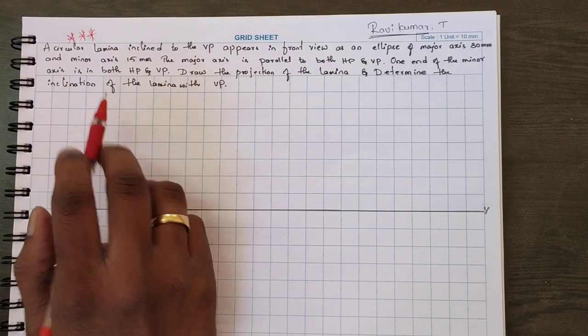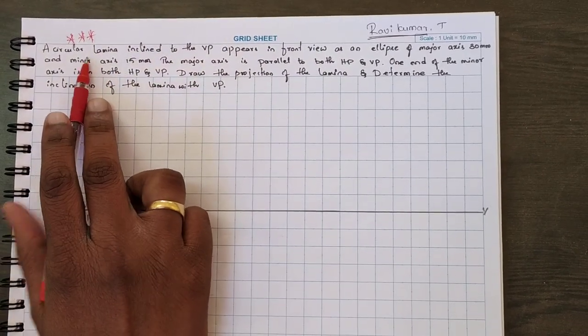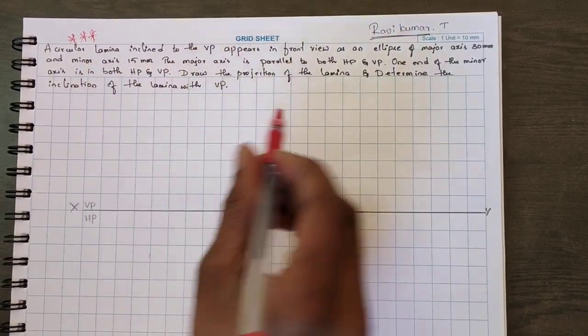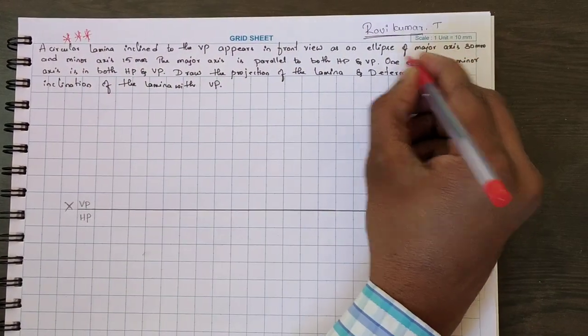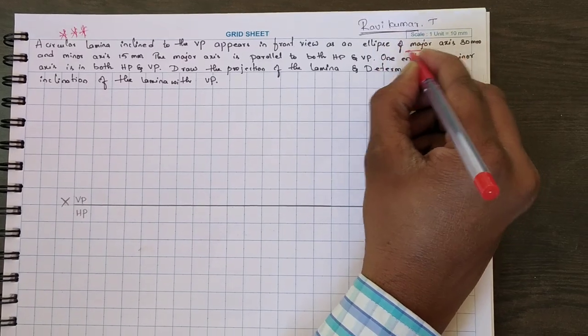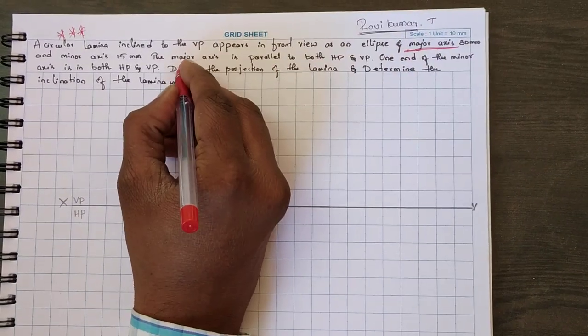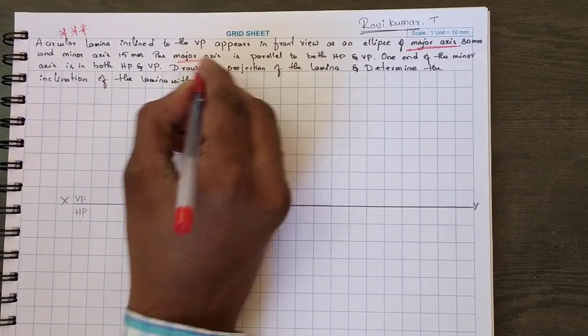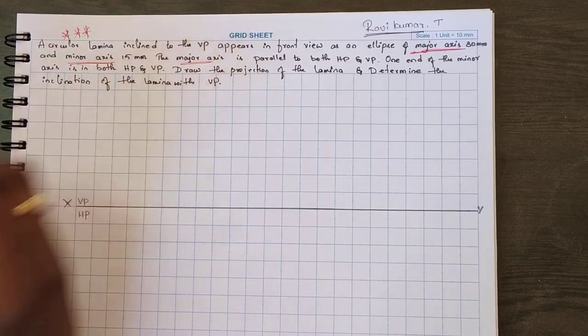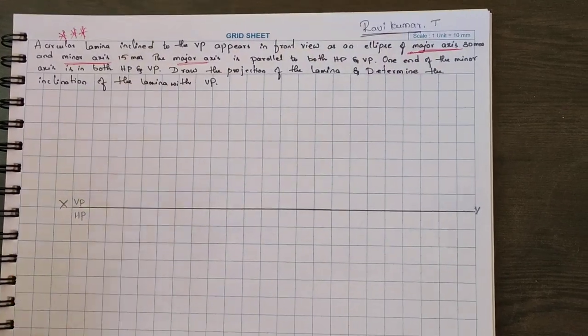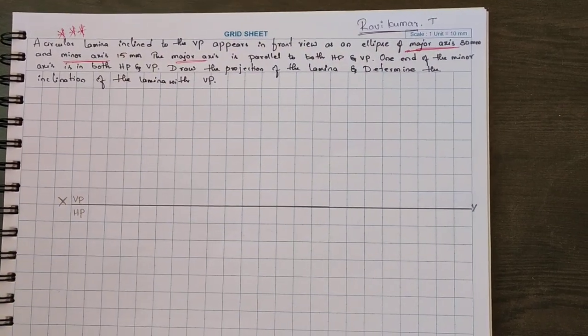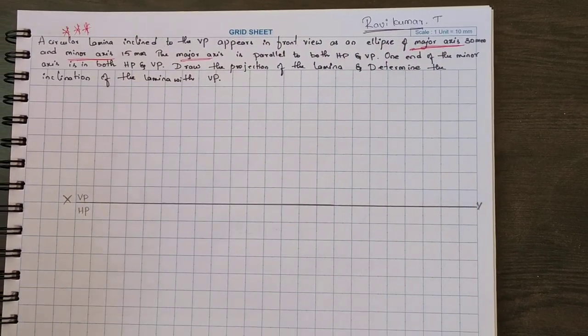This is one of the important circular lamina problems. Here it is a major axis and minor axis problem. This is one of the important problems in the CAD and circular lamina.